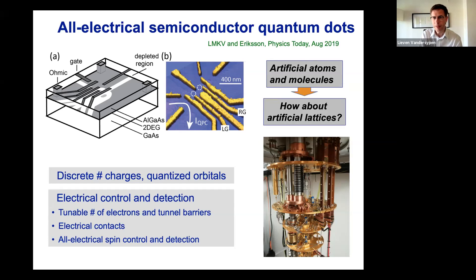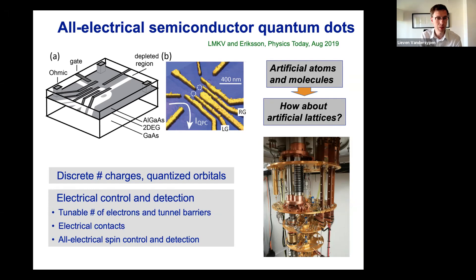If you look at the history of our community already in the late 1990s, it was realized that a single quantum dot in which electrons are confined in many ways behaves like an artificial atom. People even had fun constructing periodic tables of two-dimensional atoms, and bonding and antibonding physics of molecular orbitals was seen. So these systems have been called artificial atoms and molecules. But the natural question is: can we also construct artificial lattices such as Fermi-Hubbard lattices and study those?